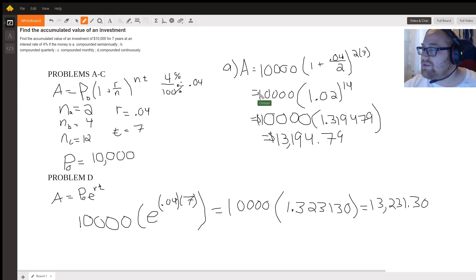When you multiply that number by 10,000, you get $13,194.79. Don't forget your units. Units are very important.